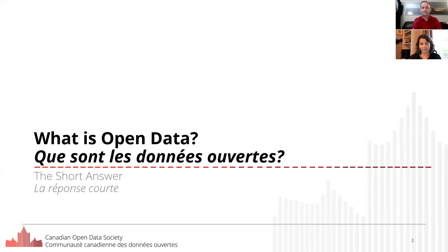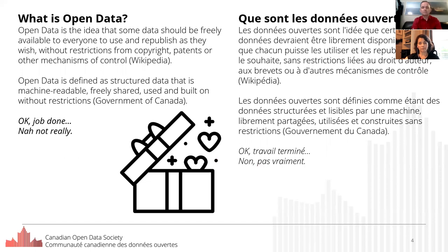We'll start with the basic definition — the short answer to the question this presentation answers. Open Data is published fully free of charge, with no conditions or restrictions on what it can be used for, who can use it, including restrictions on what software can read it. The value largely comes from being able to share and combine it.